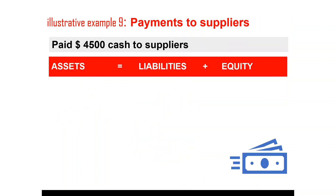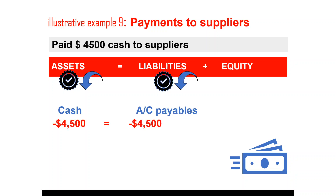The next transaction is straightforward. When the business pays its suppliers, the cash asset decreases by the payment and the liability also decreases by the payment amount, which is $4,500 in this example.